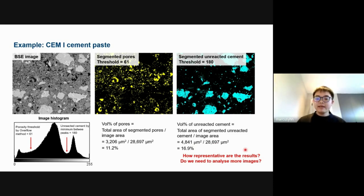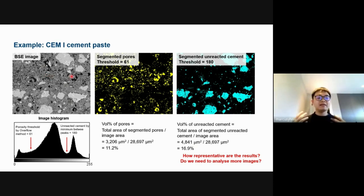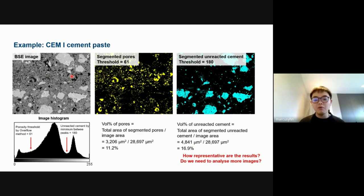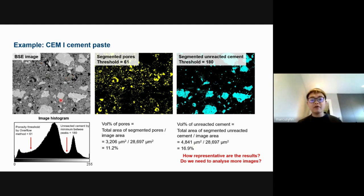By applying the overflow method threshold to the histogram, we obtain a binarised image of just the pores and background. Dividing the total area of pores by the total image area gives the estimated porosity of the cement paste. Similarly, using minima between the peaks of hydrates and unreacted cement, we can measure the volume fraction of unreacted cement, allowing determination of the degree of reaction of the cement. It is important to note that these numbers from a single image are not representative — cement is very heterogeneous, and many images must be analysed for statistically representative results. Results are also limited by pixel resolution, especially for multi-scale capillary pores.